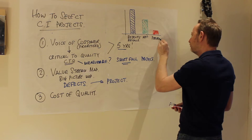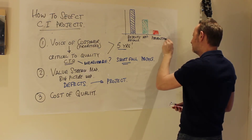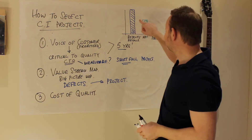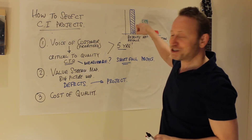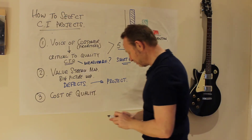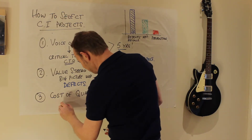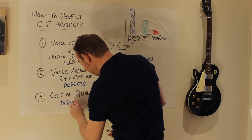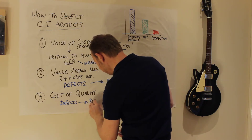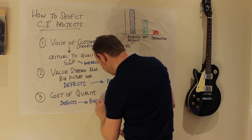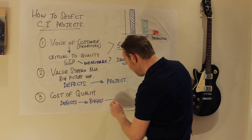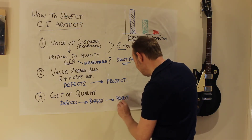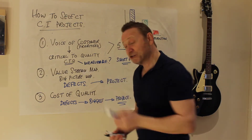The third element is prevention costs — doing fire prevention instead of firefighting. You want to see how much money you're spending on prevention versus firefighting. You're not going to eliminate all of it, but you tackle the biggest. So you're looking at defects, looking at errors, and you take the biggest — that typically is going to be a project.